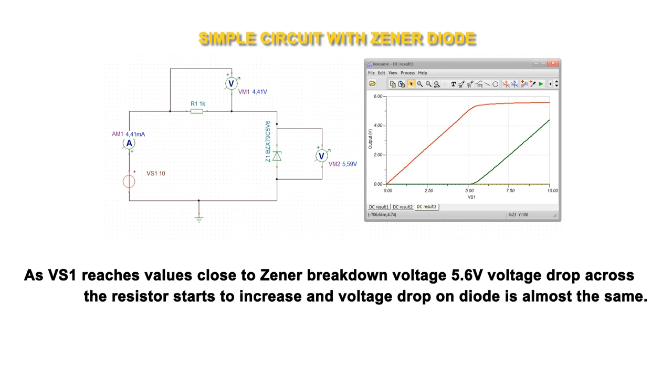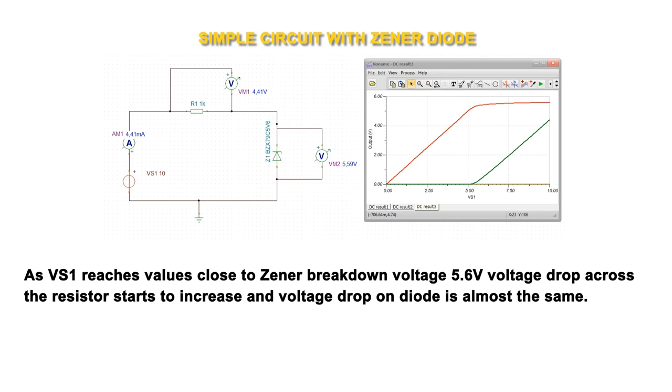As VS1 reaches values close to Zener breakdown voltage 5.6 volts, the resistor voltage drop starts to increase and voltage drop on diode remains almost the same.